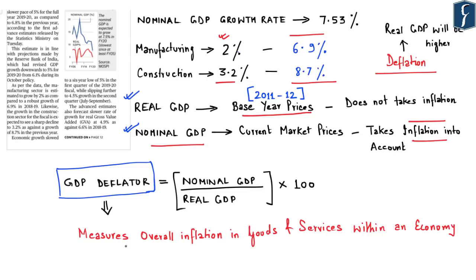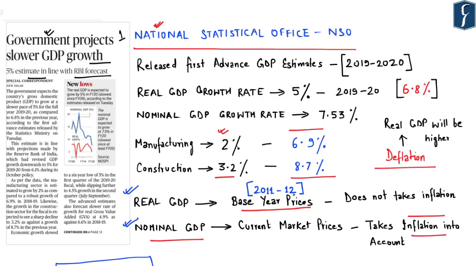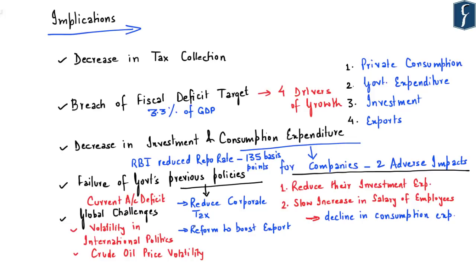The GDP Deflator measures overall inflation in goods and services within an economy. It is calculated as: Nominal GDP ÷ Real GDP × 100. Another important point is that GDP in India is estimated by the National Statistical Office (NSO), which works under the Ministry of Statistics and Programme Implementation. These are some important basics with respect to real and nominal GDP.